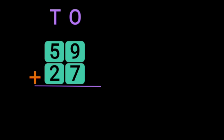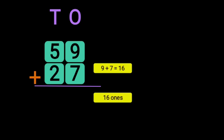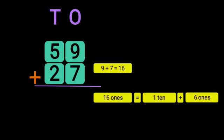Let us move on to the next example. We have 59 plus 27. Write down the place values 1's and 10's. Begin the addition of the digits in the 1's place: 9 plus 7 will give you 16. So we have 16 1's. 16 1's can be regrouped as 1 ten plus 6 ones. Write down the 6 in the 1's place and take the 1 ten as a carry over to the 10's place.